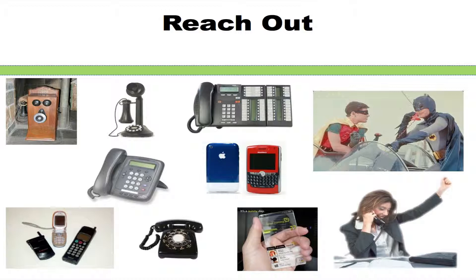When you combine that statistic with the half dozen or so agents that might have a lead's information, you can see exactly why you need to try to beat them to the punch. You should have your CRM set up to follow up with a lead automatically via email, but also call them as soon as you possibly can. According to PCMS Consulting's research, over 70% of prospects will work with the organization that contacts them first. Combine that with the fact that over 90% of all new home searches start on the internet — you can't afford to wait around when making that initial call.